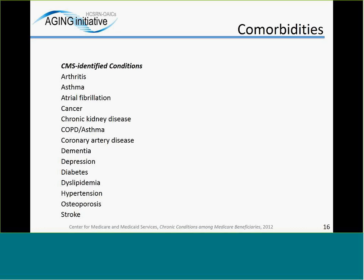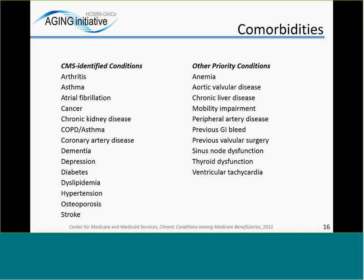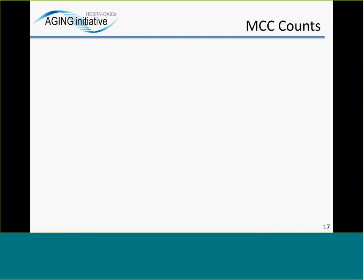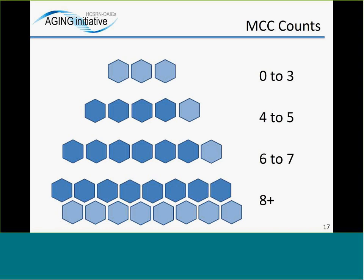We captured comorbidity data for up to three years prior to ICD implantation. Starting with 15 conditions recommended by CMS and the Department of Health and Human Services' Strategic Framework on Multiple Chronic Conditions, we excluded heart failure due to its near ubiquity in this sample. We then added 10 additional comorbidities common among ICD recipients or potentially impactful for therapy outcomes, resulting in a list of 24 comorbidities. We assigned a value of one to each comorbidity and applied quartile-based cutoffs, categorizing participants into four groups: those with 0–3, 4–5, 6–7, and 8 or more comorbidities.